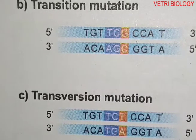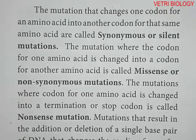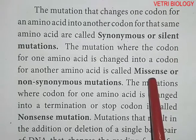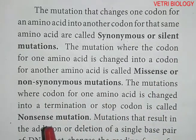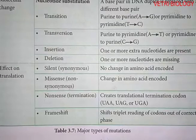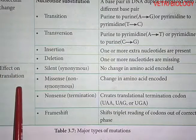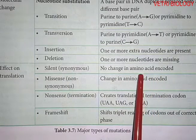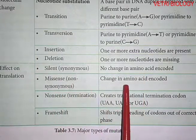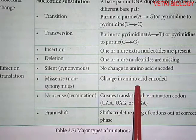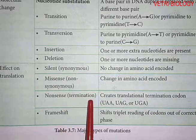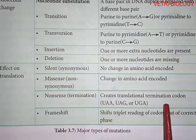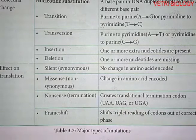Based on these different types of mutations, three effects on translation can occur. They are: synonymous or silent mutations, missense or non-synonymous mutations, and nonsense mutations. A silent mutation causes no change in the amino acid encoded — the same amino acid is still produced. A missense or non-synonymous mutation changes the amino acid encoded. A nonsense mutation creates a translational termination codon — such as UAA, UAG, or UGA.